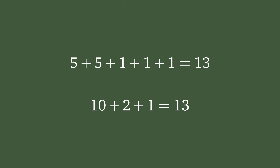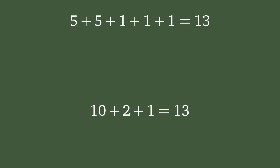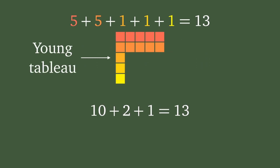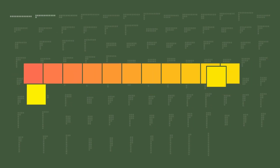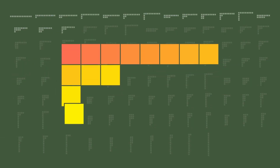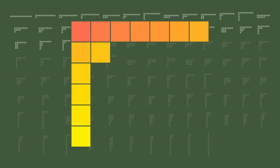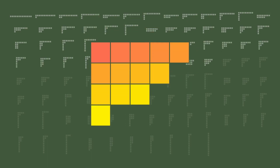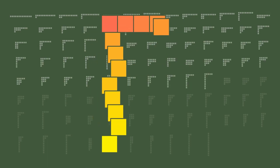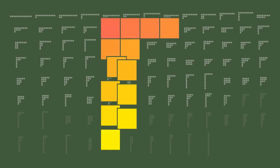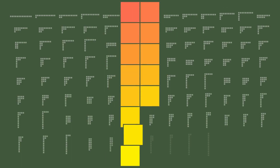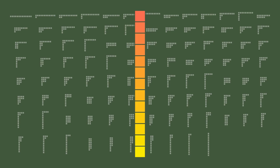One popular way of visualizing an integer partition is in the form of a so-called Young tableau, which is a diagram consisting of boxes in which every row corresponds to one part of the partition. It is a very interesting question to determine how many different integer partitions a number like 13 has. These quantities are given by the so-called partition function. For 13, there are in total 101 different integer partitions, all of whose corresponding Young diagrams are currently illustrated.